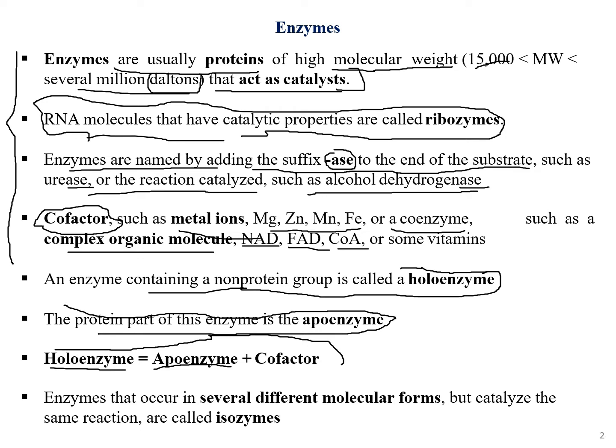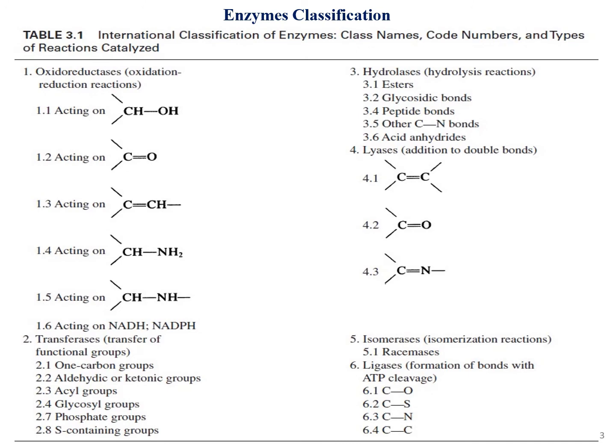Enzymes that occur in several different molecular forms but catalyze the same reaction are called isoenzymes, also known as isozymes. We will go through isoenzymes in more detail as we continue.